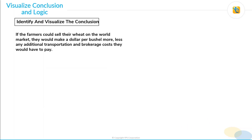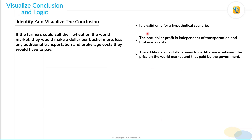Let's visualize this conclusion to understand it better. First, it is valid only for a hypothetical scenario — only if the farmers are able to sell their wheat on the world market. Second, the one dollar profit is independent of transportation and brokerage costs. The conclusion says 'less any additional transportation and brokerage costs they would have to pay,' so the impact of any additional transportation and brokerage costs has already been taken into account. Any choice that talks about these factors will not be relevant.